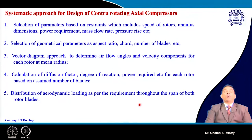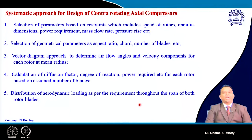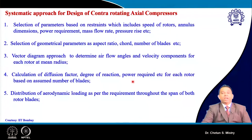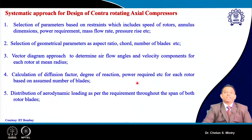The systematic design approach includes: velocity triangle calculation, flow angles, annulus dimensions, power requirement, mass flow rate, and pressure rise. Selection of geometrical parameters like aspect ratio, chord, and number of blades is done initially. Then velocity triangle calculations and velocity component calculations follow, based on what was learned for axial flow compressor design. Performance parameters like diffusion factor and degree of reaction are then computed.